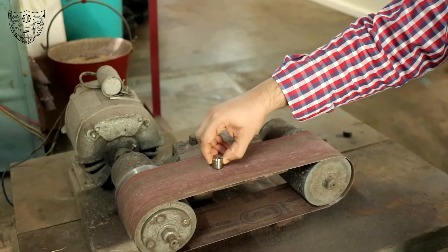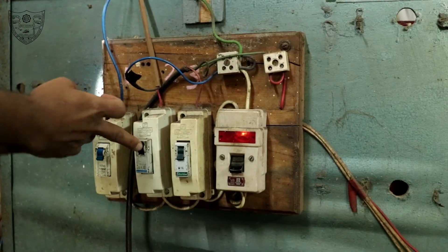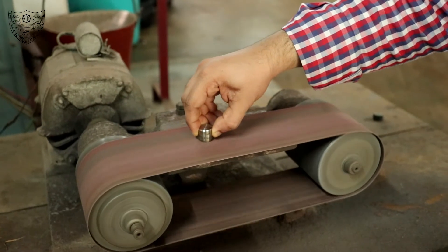The first step in microstructural determination is to polish the sample. So we use a belt grinder to coarsely polish to remove oxides and other deposits present in the sample.